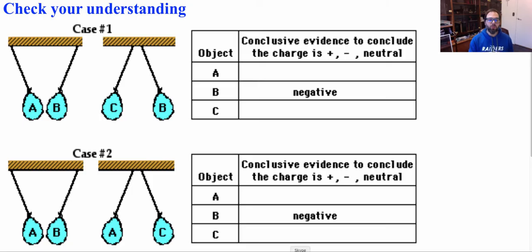Welcome back. Let's see how well you did. We look at A and B in case one. A is attracted to B and B is negative, therefore the charges must be opposite. So we know A must be either positive or it must be neutral. Now we look at C and B. C and B repel, therefore they must be like charges and it cannot be neutral. Therefore, we know C must be negative.